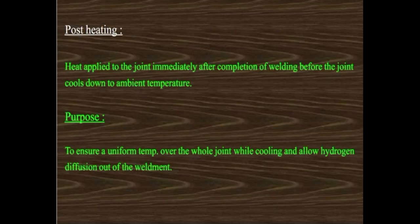Post heating is heat applied to the joint immediately after the completion of welding, before the joint has cooled down to ambient temperature — to avoid sudden cooling which can generate defects. The purpose of post heating is to ensure uniform temperature over the whole joint while cooling and to allow hydrogen to diffuse out of the weldment.